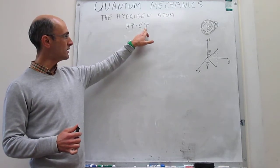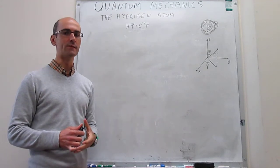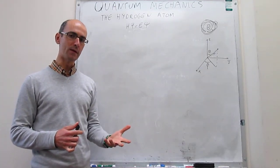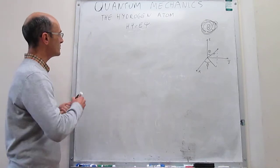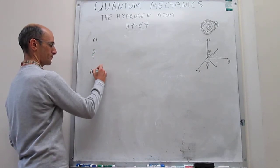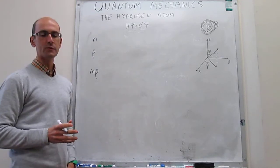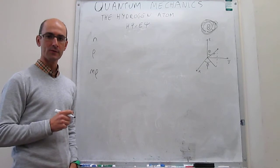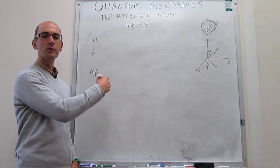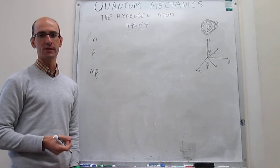The solutions are going to be the energy and the wave function, and they're going to contain some quantum numbers, as we have seen in other cases. In this case the motion is three-dimensional, so you're going to have three quantum numbers. They are called N, L, and M sub L. Something very interesting about these quantum numbers is that the value of some of them depends on the value of others — they are not fully independent of each other. The value of L depends on N, and the value of M sub L depends on L.